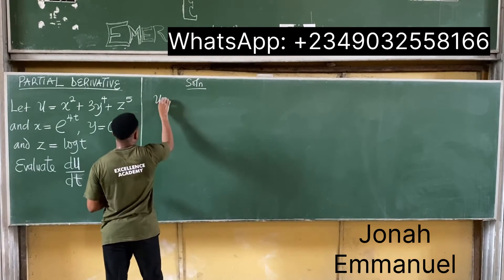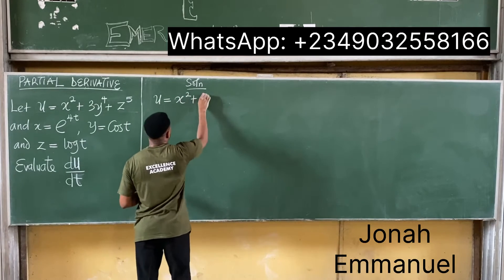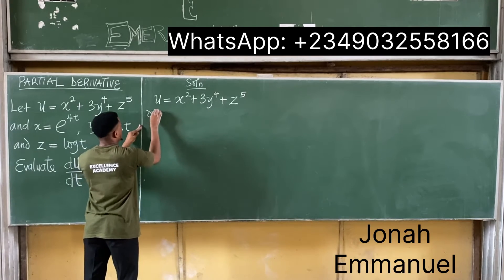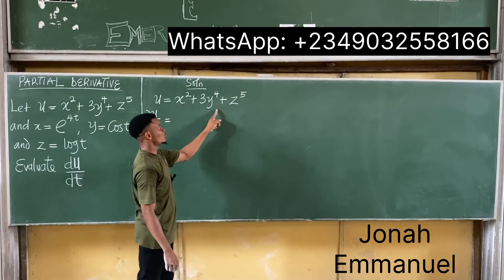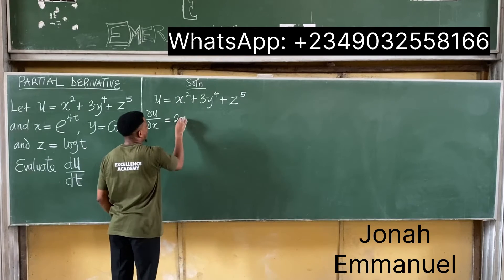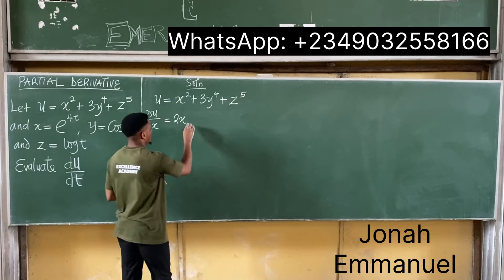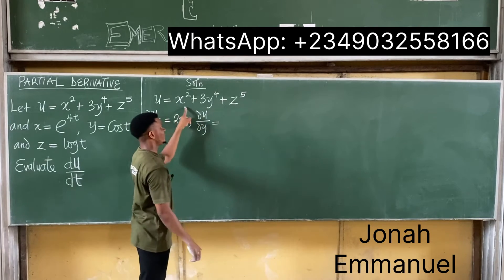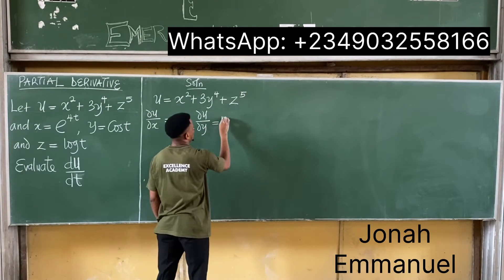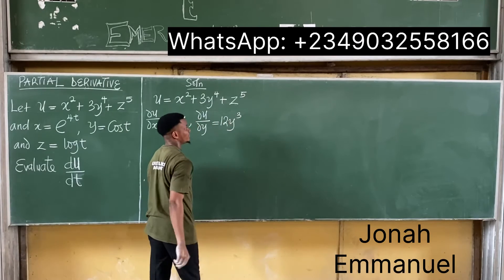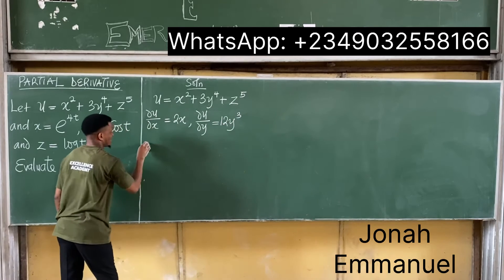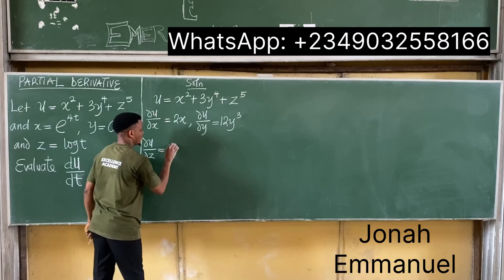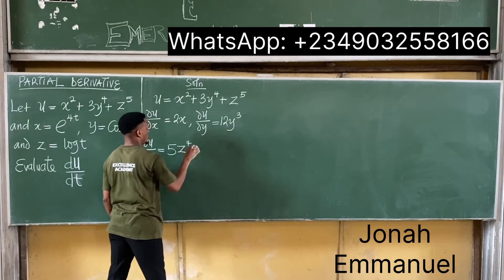Solution: given u equals x² + 3y⁴ + z⁵, my first task is to find the partial derivatives. Partial u over partial x equals 2x. Partial u over partial y: differentiating 3y⁴ gives 12y³. Partial u over partial z: differentiating z⁵ gives 5z⁴.